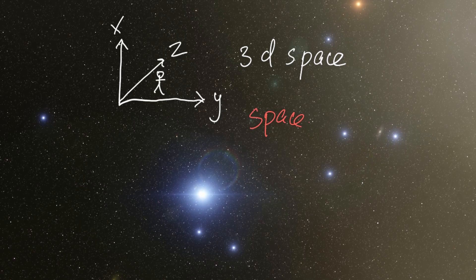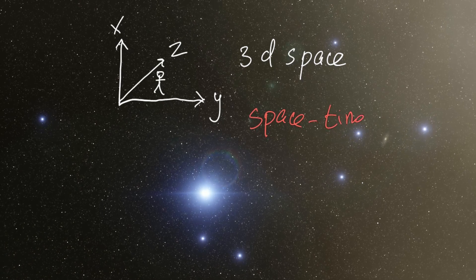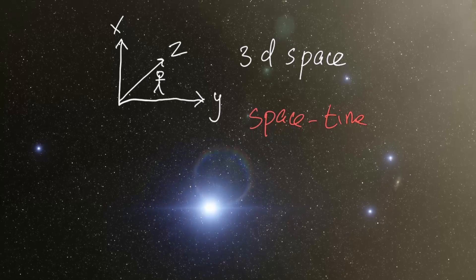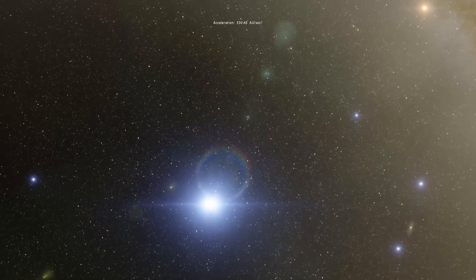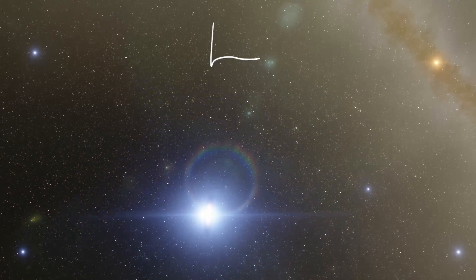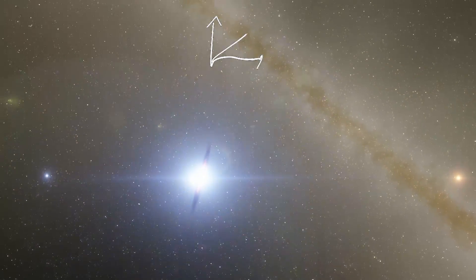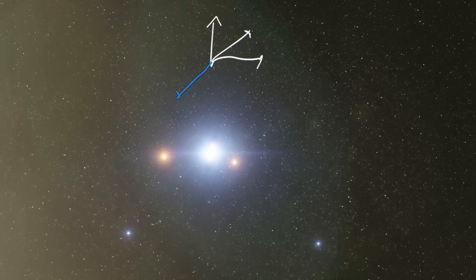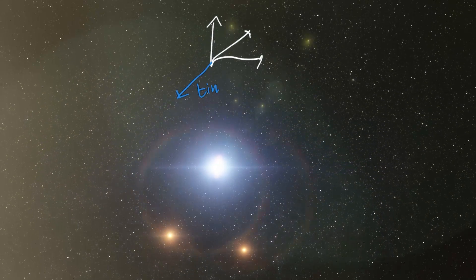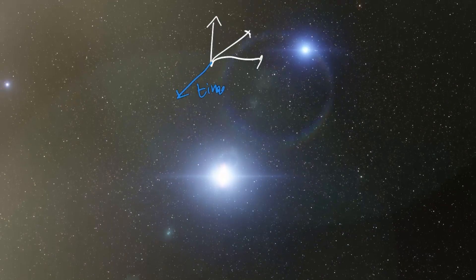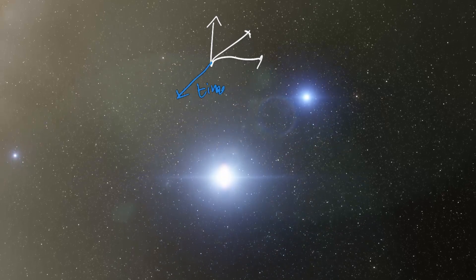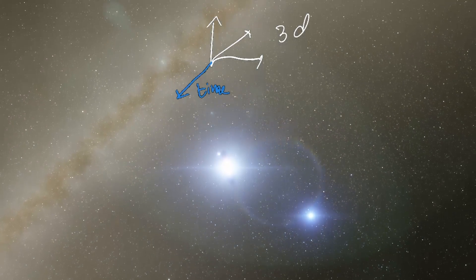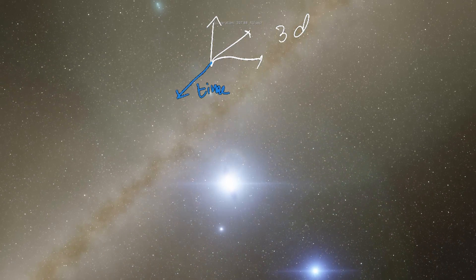Now we're going to talk about space-time, and to talk about space-time we need to possibly get rid of some dimensions to make it more visually comprehensible. So this time we're going to change the three dimensions into four dimensions — we're going to add a dimension of time, because that is what space-time is. Space-time has four dimensions.